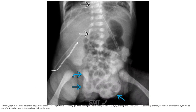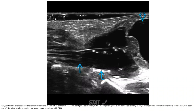AP radiograph in the same patient on day one of life shows a low and full sac containing gas-filled bowel, as well as splaying of the pubic bones. Note also the spinal anomaly — truncation of the lumbar spinal cord with a meningocele extending through the dysraphic bone.